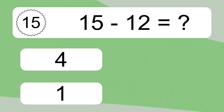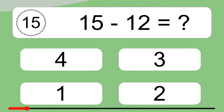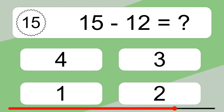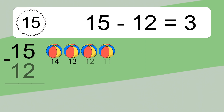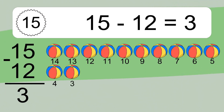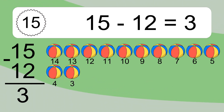15 minus 12 equals what? 15 minus 12 equals 3. Let's count it: 14, 13, 12, 11, 10, 9, 8, 7, 6, 5, 4, 3.